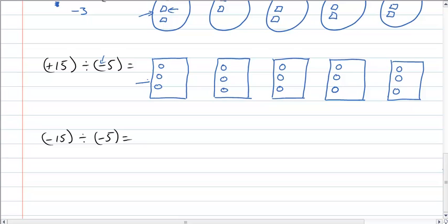We see the different signs. Right here. Outside is negative, inside is positive. Because they're different, our answer is going to be negative 3.